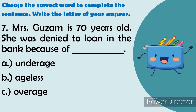Number 7: Mrs. Ghazam is 70 years old. She was denied a loan at the bank because of blank. The answer is: overage.